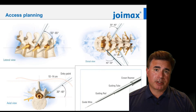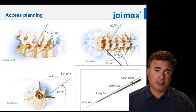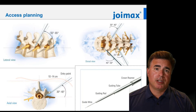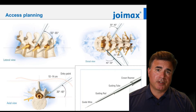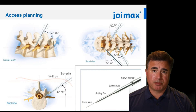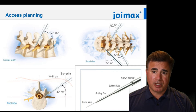What sets apart the JOIMAX procedure from other procedures is that in addition to placing a series of serial dilators, you're also able to insert a series of serial reamers to resect the non-articulating surface of the superarticular process, thereby enlarging the neuroforamen. This becomes particularly important when you're dealing with foraminal stenosis as opposed to just a soft disc herniation.